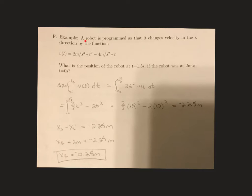In this example problem, we have a robot that is programmed so that the velocity changes in the x direction by the function given here.